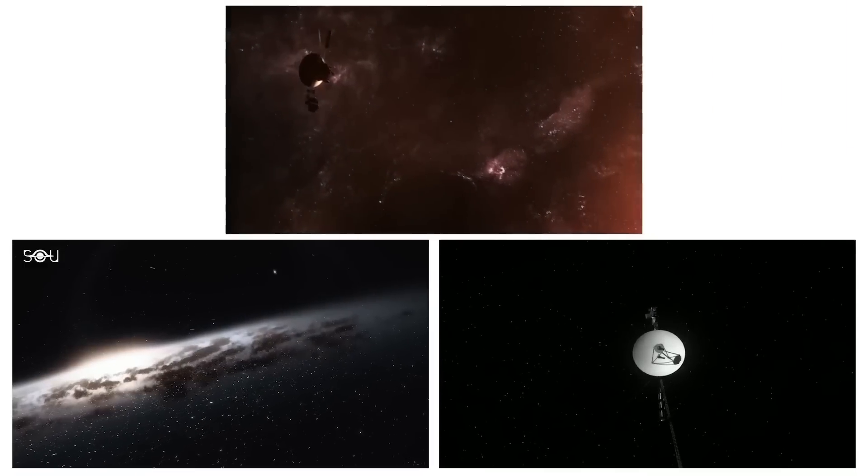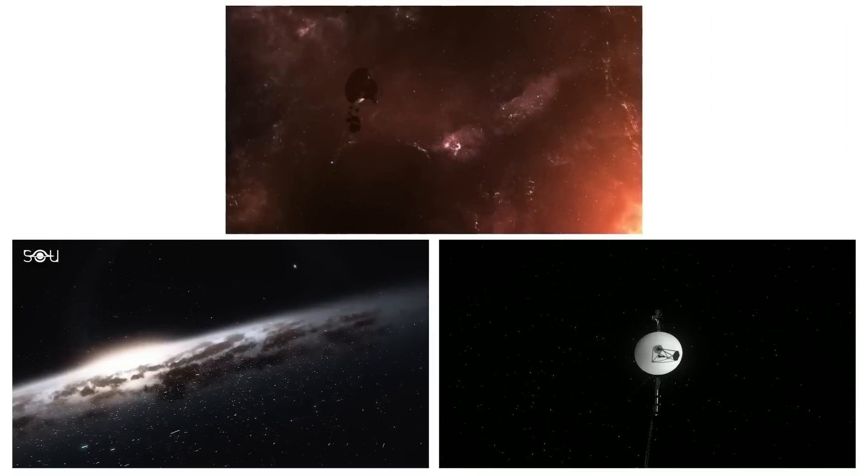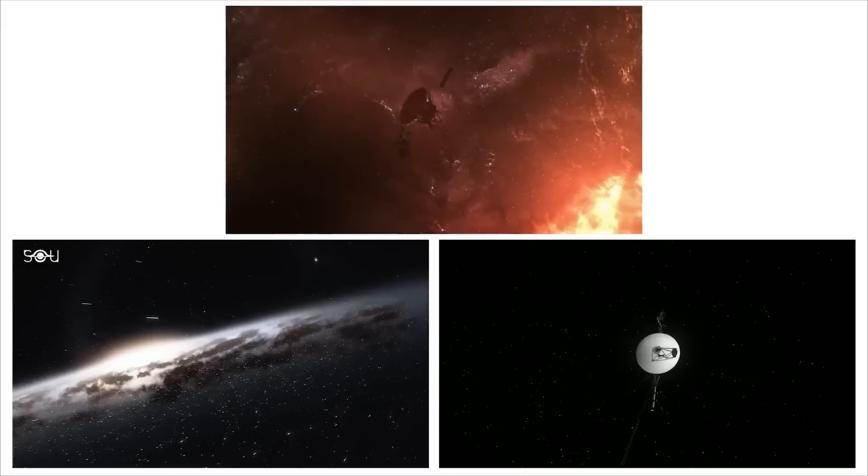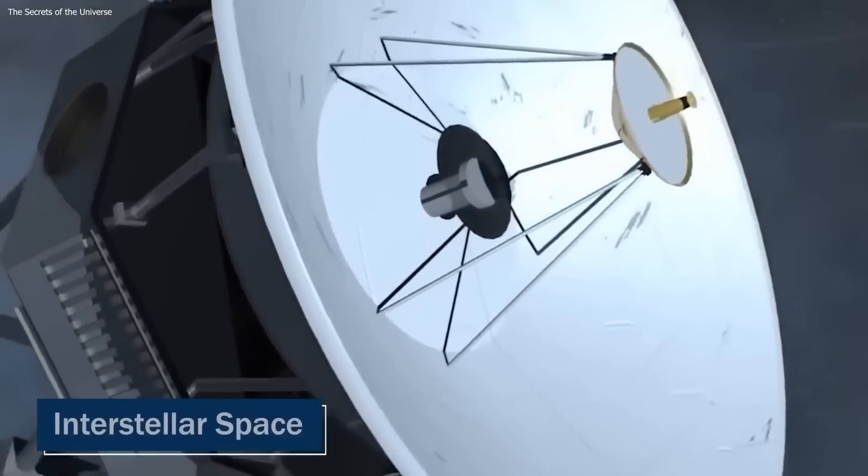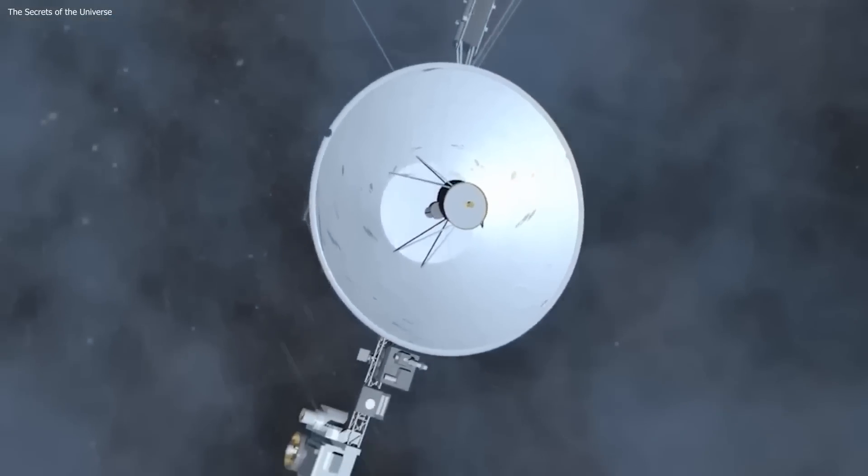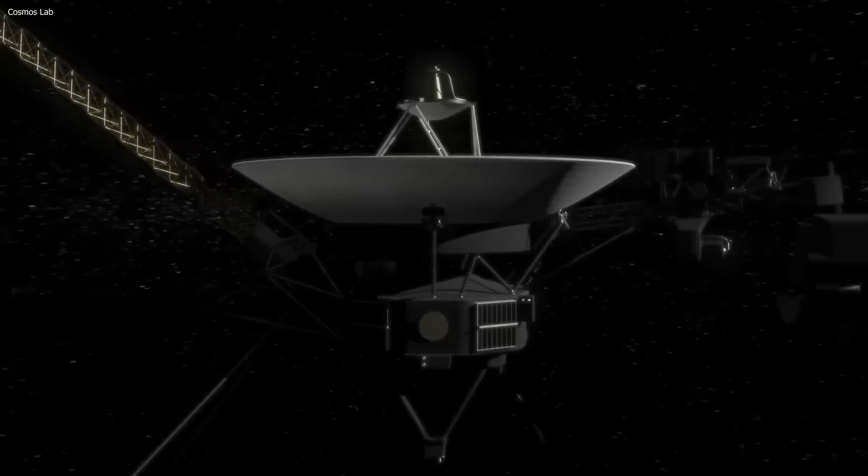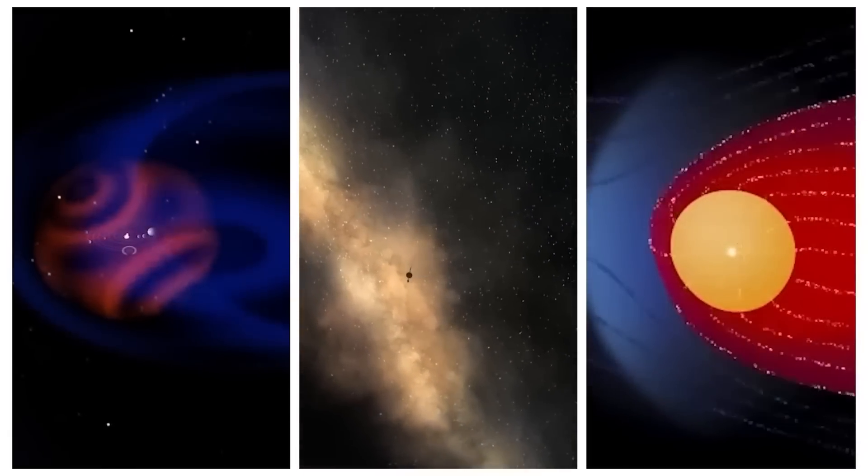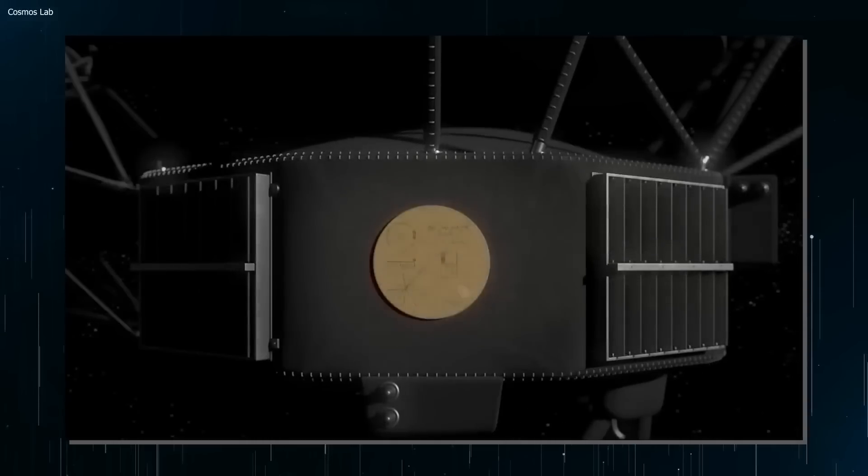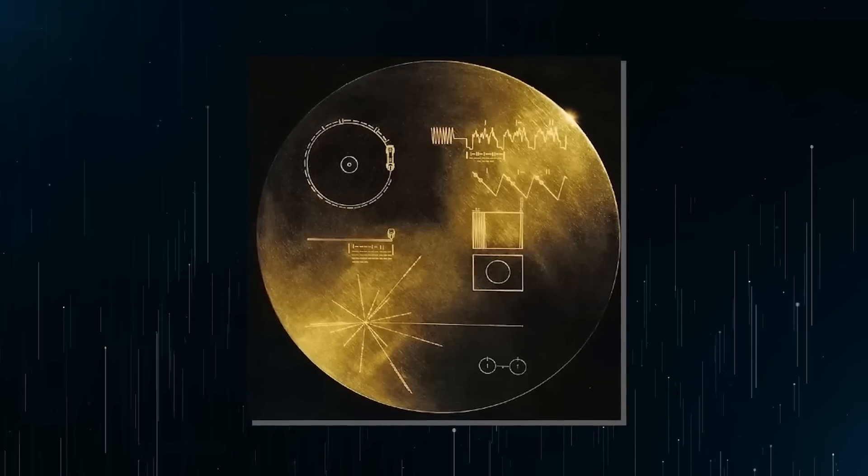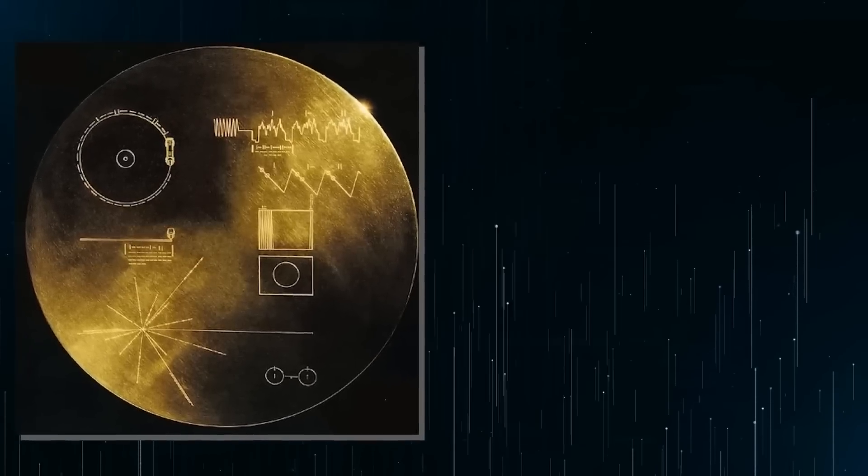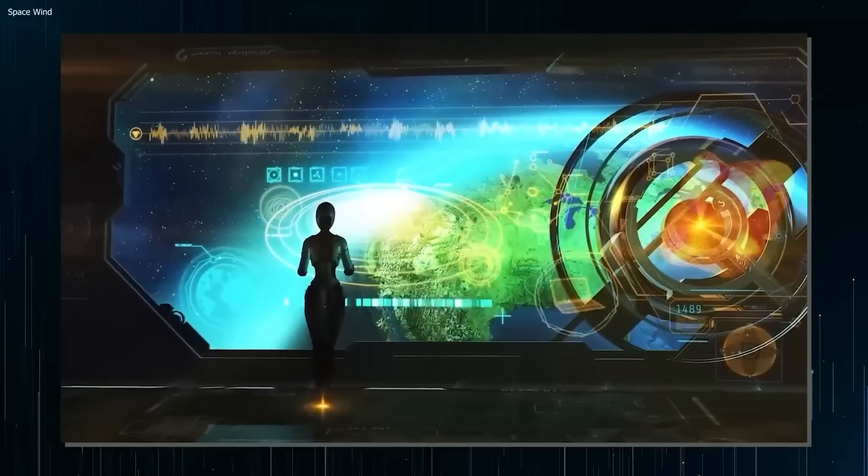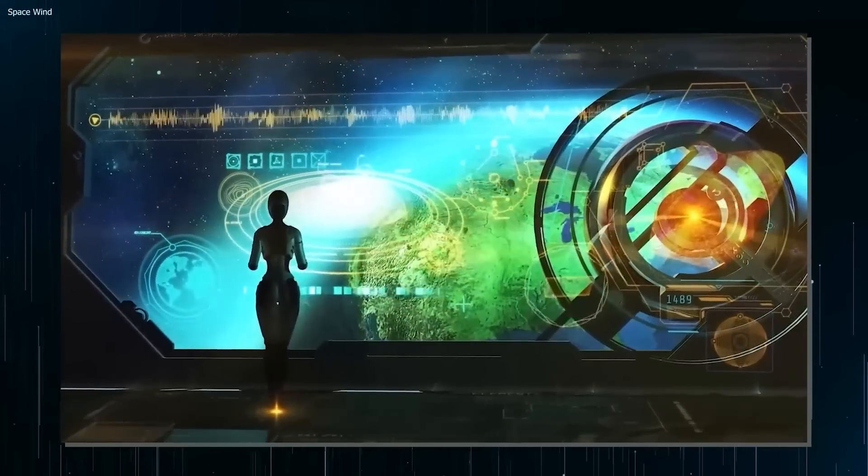After completing their primary missions, the Voyagers continued to fly toward the edge of the solar system and eventually entered interstellar space, making them the first human-made objects to do so. The Voyager probes carry a variety of scientific instruments designed to study the environment of space, including cosmic rays, magnetic fields, and plasma. They also carry a golden record containing sounds and images from Earth, intended as a message to any extraterrestrial life that might encounter the spacecraft.